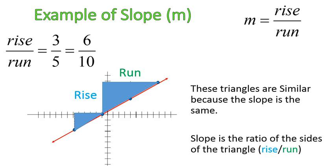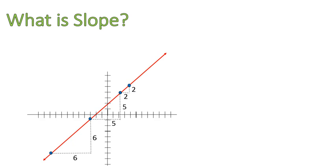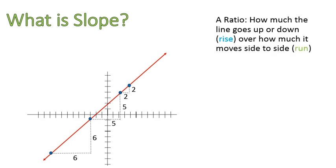We could say the rise and run of the smaller triangle is three over five, and the rise and run of the larger triangle would then be six over ten. Notice that they are proportional. They are equivalent ratios. They are similar triangles, and they are also showing the slope of this line. So let's talk just a moment, just to try and clarify even further using triangles, about what slope is. Slope's a ratio of how much the line goes up or down, that's called the rise, over how much it moves from side to side, which is called the run.